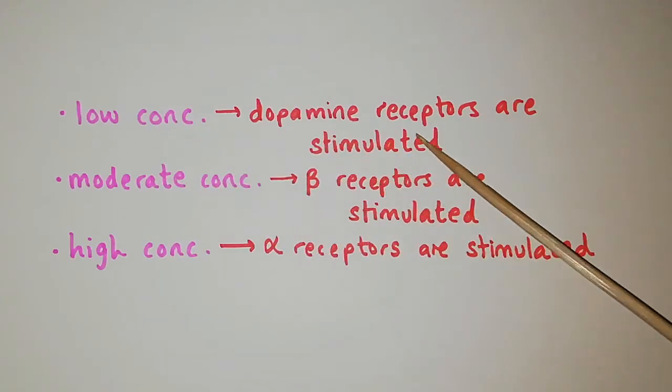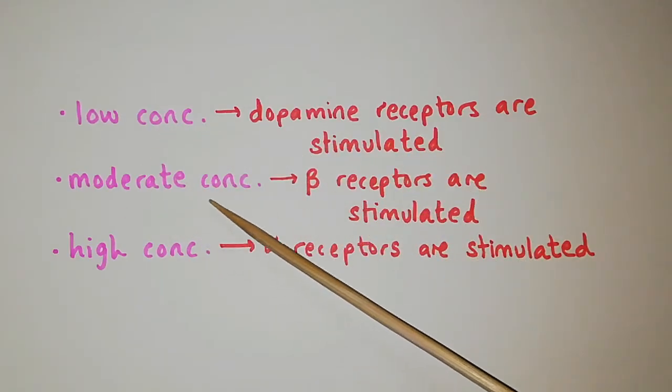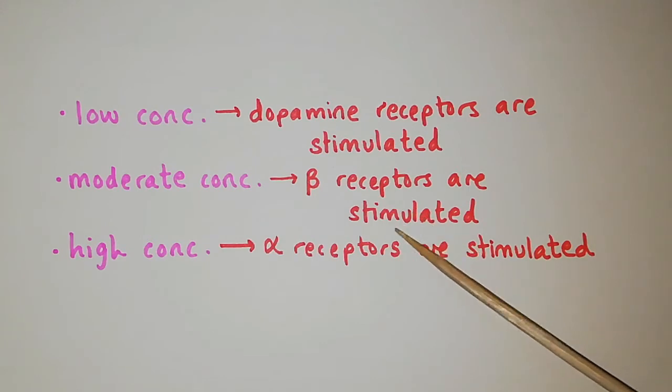In low concentration, dopamine receptors are stimulated. In moderate concentration, beta receptors are stimulated. And in high concentration, alpha receptors are stimulated.